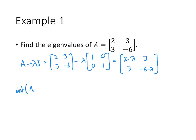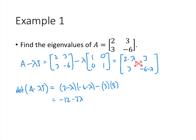The determinant of A minus lambda I — for a 2 by 2 matrix we take the diagonal products and subtract them. That gives us (2 minus lambda)(negative 6 minus lambda) minus 3 times 3. Multiplying out: 2 times negative 6 is negative 12, 2 times negative lambda is minus 2 lambda, negative lambda times negative 6 is plus 6 lambda, plus lambda squared, minus 9. That gives us lambda squared plus 4 lambda minus 21.